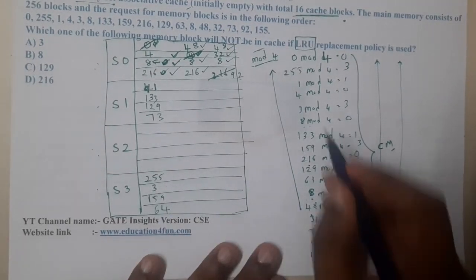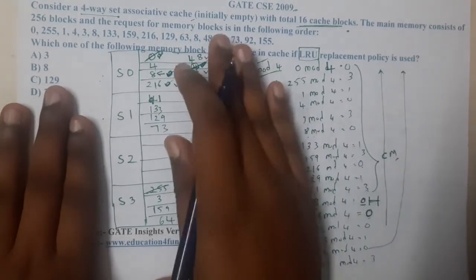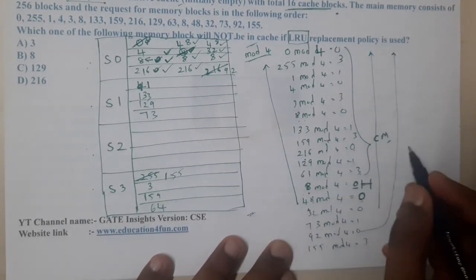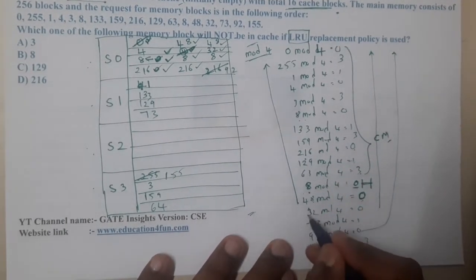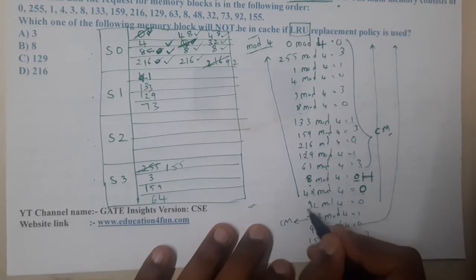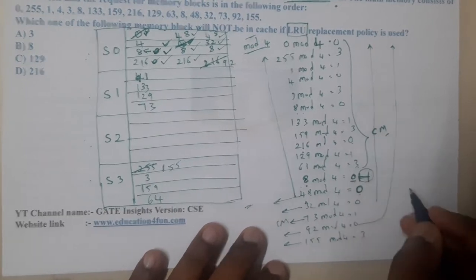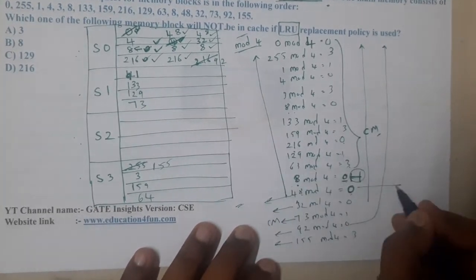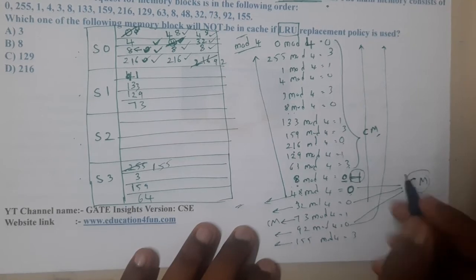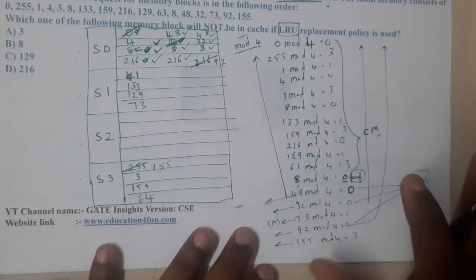Now the final list is ready. Let us complete our writing. These are all compulsory misses because those things never came before. Similarly when coming to 73, this is also a compulsory miss, and this is also a compulsory miss. So everything is a compulsory miss except this hit one. These numbers which have removed some others, this number, this number, and this number, these numbers are also called conflict misses because they are forcefully removing someone from the list. Remember these terminologies, this will be useful somewhere.